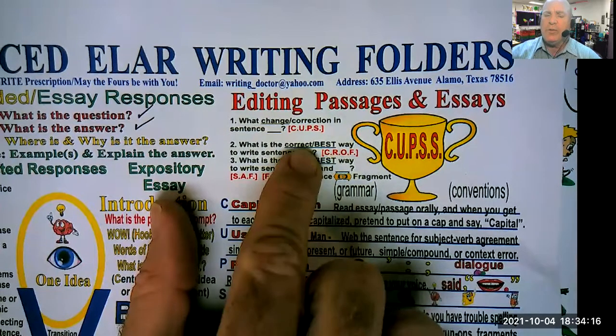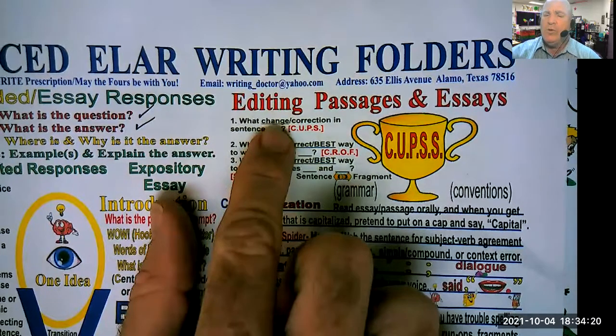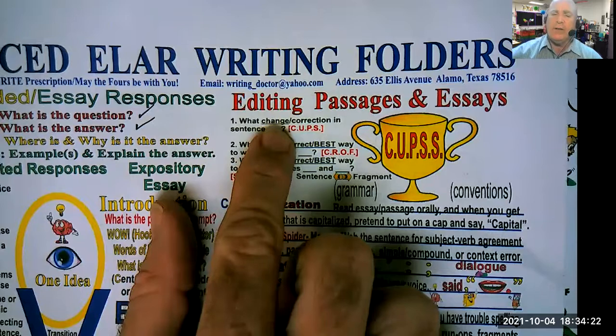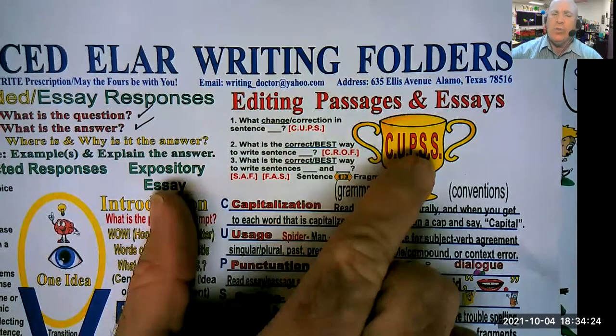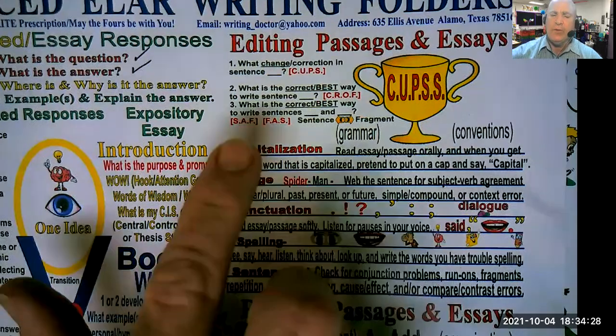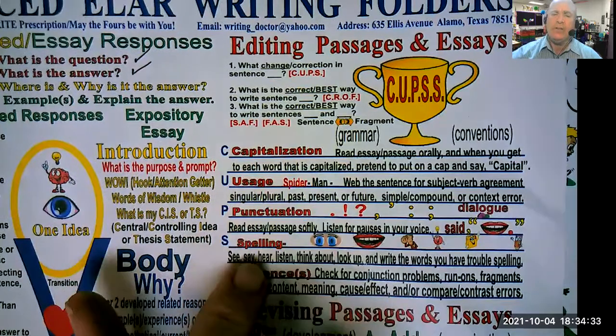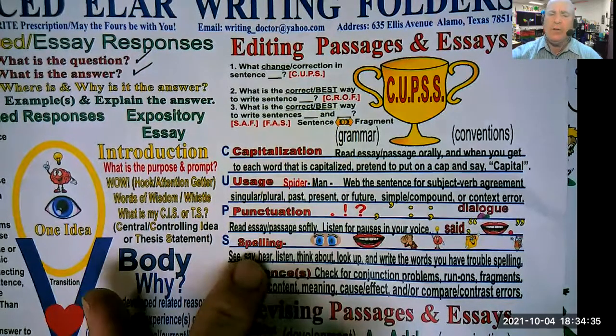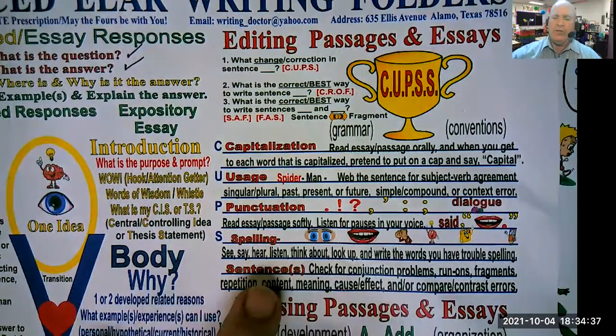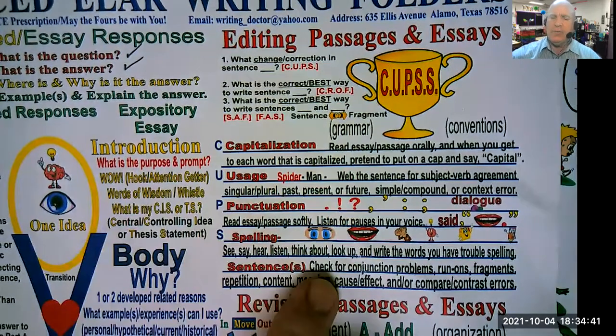So whenever it says what change, which is going to be our second question, we do CUPS, regular CUPS, and that's been true 100% of the time that the mistake will either be in capitalization, usage, punctuation, or spelling. If it's a sentence boundary, like we're going to look at right now, we're going to check for conjunction problems, run-ons, fragments.